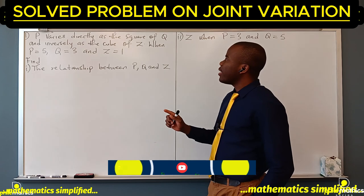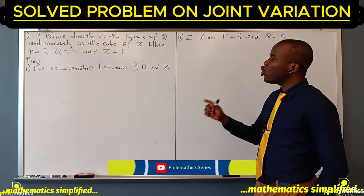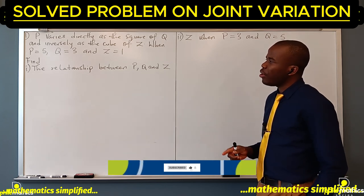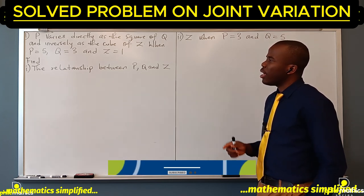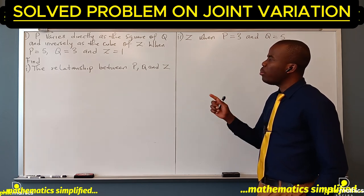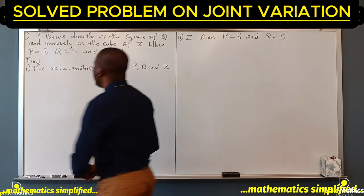p varies directly as the square of q and inversely as the cube of z. When p is 5, q is 3, and z is 1, find the relationship between p, q, and z. This is a joint variation problem.